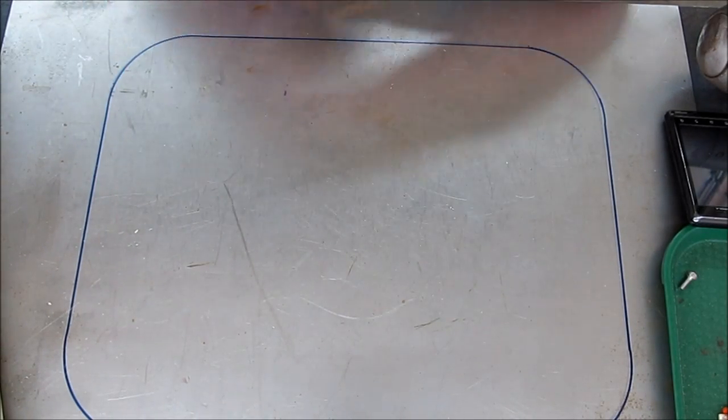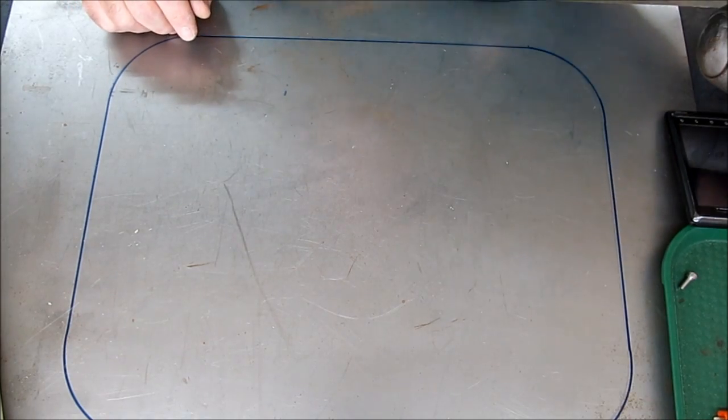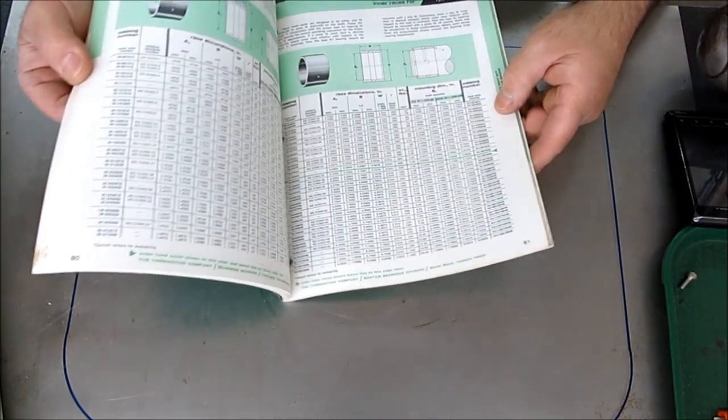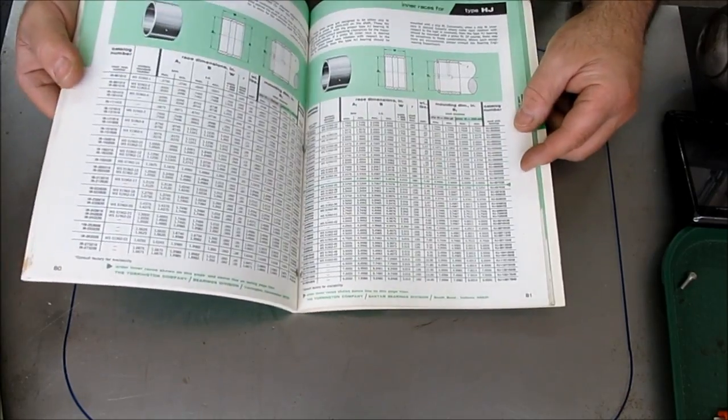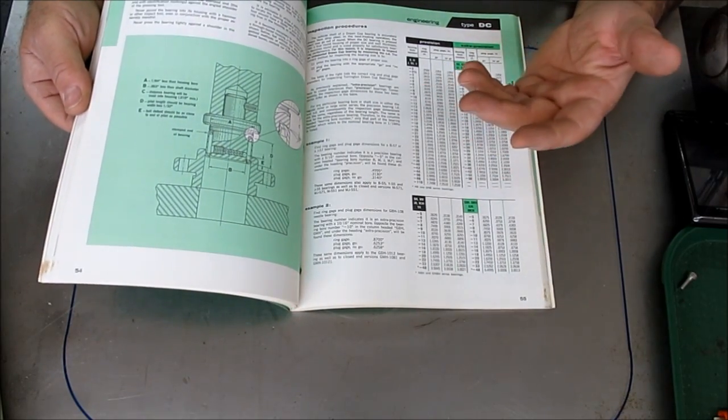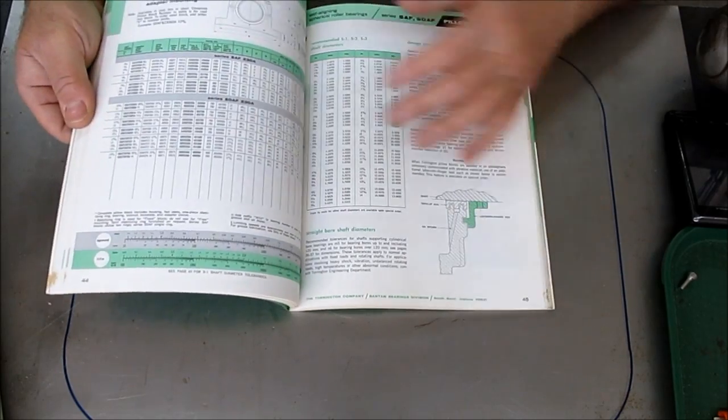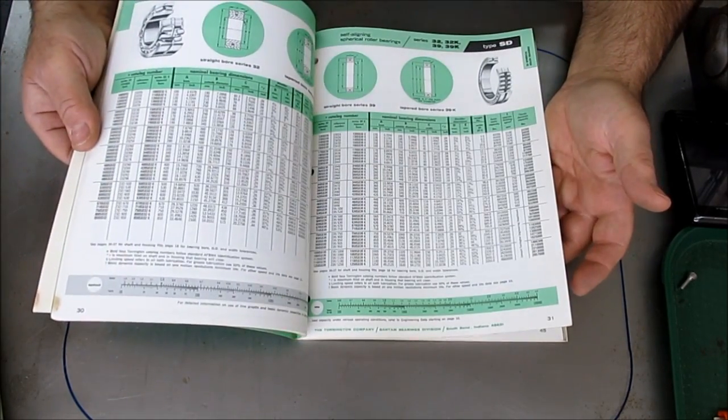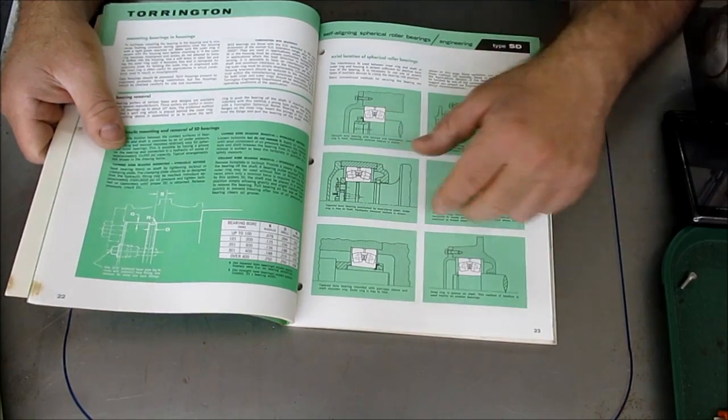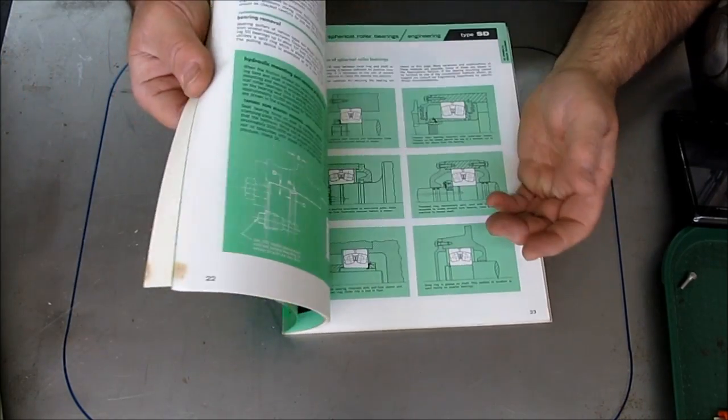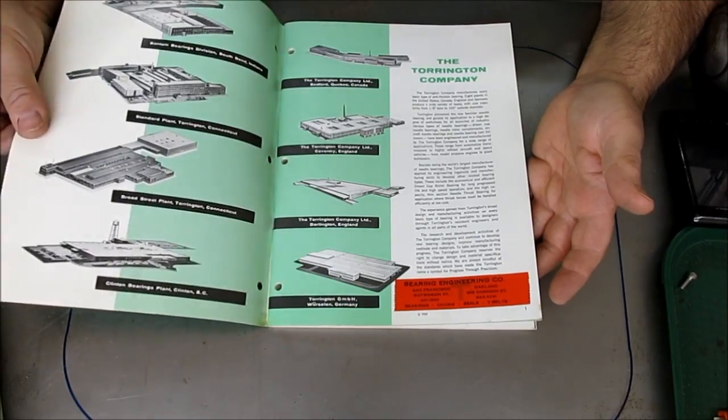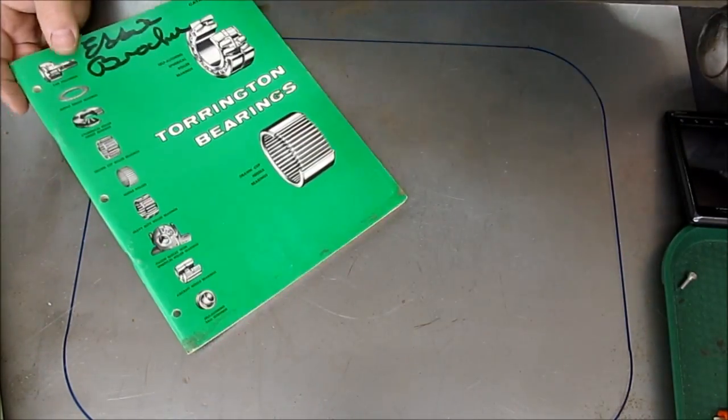So that's another one. It's just a Torrington catalog. But this is when they used to give out catalogs. Now you try to look this crap up online and it's a damn nightmare, right? So books are still good. You have to weed through piles and piles of dead-end links on the web to find this information. They used to just hand it out in book form.